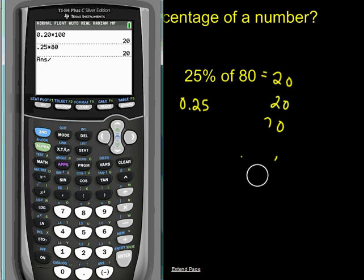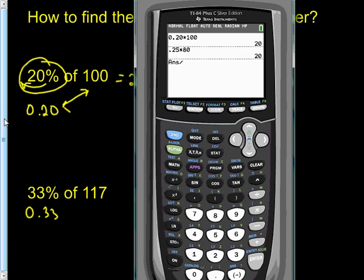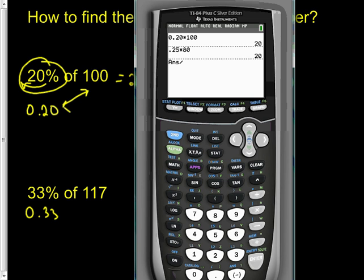Let's take a look at what happens when you have a number that's not as nice and easy and probably will result in a decimal. 33% of 117, so 0.33 times 117.